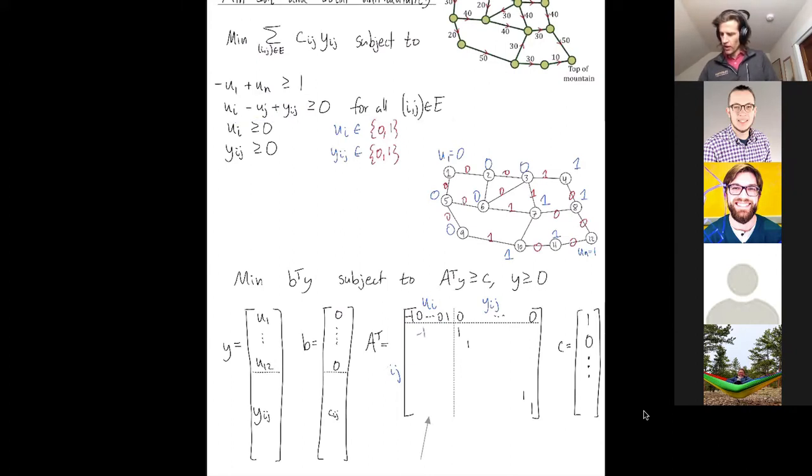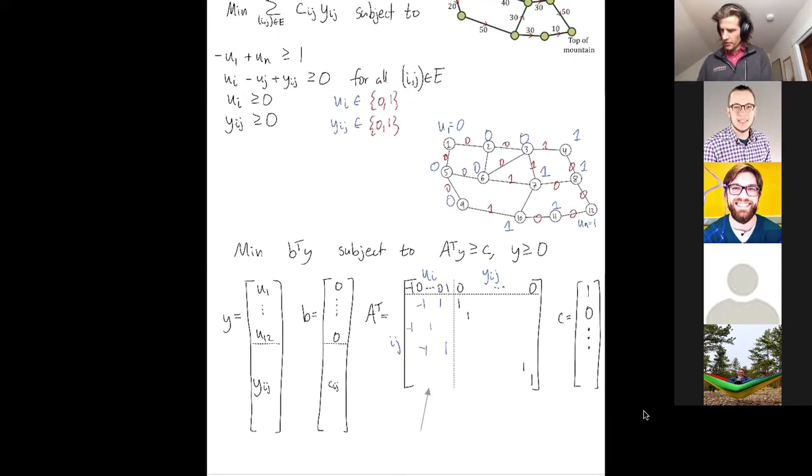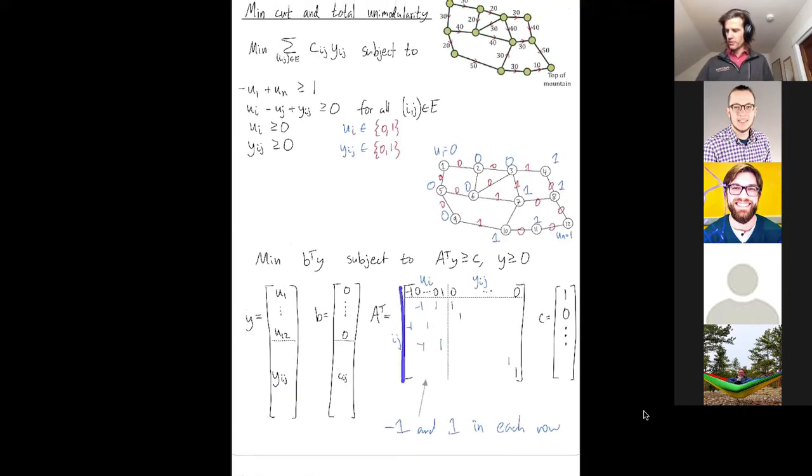So each row has a single negative one and a positive one somewhere. And that's just telling you for this edge, I'm parameterizing edge by these rows. For this edge what are the vertices that it's leaving from and going into? So I should say here this has negative one and a one in each row. I'm talking just about the left half of this matrix. The bottom right part is just the identity matrix. All right, so when I multiply the y vector by one of these rows I get exactly this constraint and it should be at least zero.